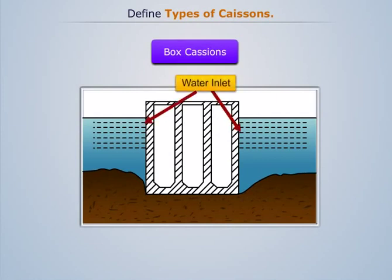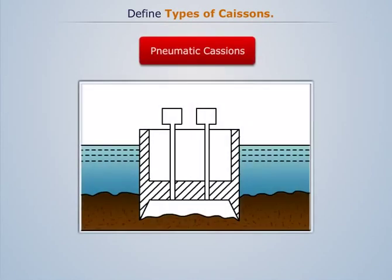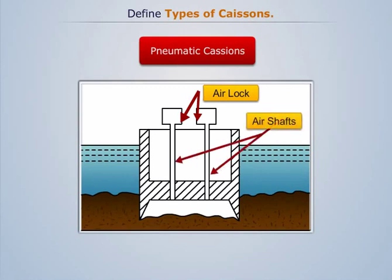Pneumatic caissons are installed below the water level to maintain the water supply. These caissons have both top and bottom closed and use compressed air to stop the inflow of water. A sectional view of the caisson is shown in the image. Air locks are used to stop water entry until we reach the water level, and air shafts transport air into the workplace. After use, these cavities are filled with concrete.